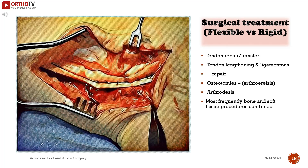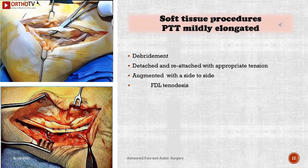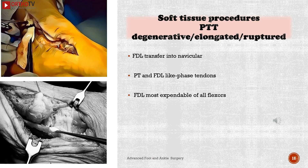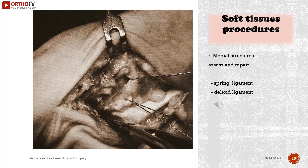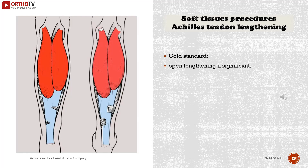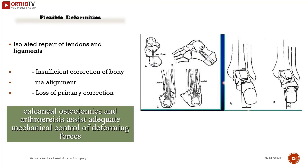Surgical treatment options include flexible versus rigid procedures: tendon repair/transfer, tendon lengthening, ligamentous repair, osteotomies, arthroisis, and arthrodesis — most frequently bone and soft tissue procedures combined. For the posterior tibial tendon when mildly elongated: debridement, detachment and reattachment with appropriate tension, augmented with a side-to-side FDL tenodesis. When degenerative, elongated, or ruptured: flexor digitorum longus transfer into the navicular. The FDL is considered the most expendable of all flexors. Medial structures including the spring ligament and deltoid ligament should be assessed and repaired.